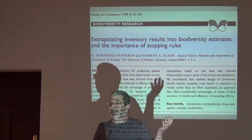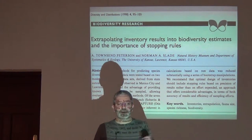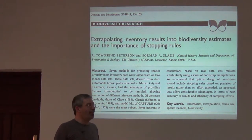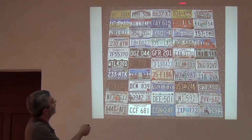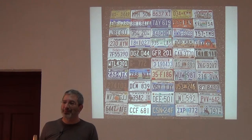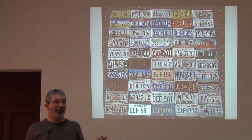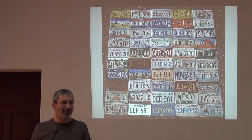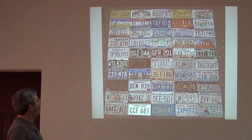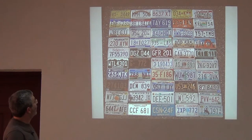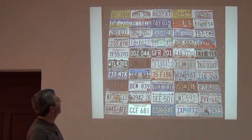I could have set up a simulation, but I'm not really good at that. So instead, this is a very nice situation because there are 50 states in the United States. I have a fauna or flora — or license plate group — of 50 species. And there are some other interesting things about this situation. Kansas and Missouri are very common in Lawrence, Kansas — I literally can't see Kansas.